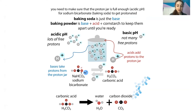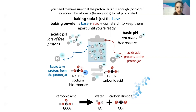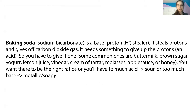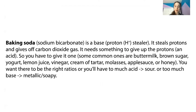It relies on this acid-base interaction. When you have baking soda, you just have the base — the sodium bicarbonate. To produce carbonic acid, you need to acidify the solution so it can break down into water and carbon dioxide. Typically this means adding something like buttermilk, brown sugar, yogurt, lemon juice, vinegar, cream of tartar, molasses, applesauce, or honey. Cooking often involves getting the right ratios so you don't have too much acid, making it sour, or too much base, making it taste soapy or metallic.